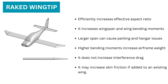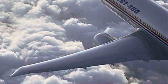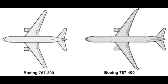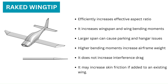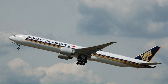Raked wingtip: this type of wingtip is a very efficient means to increase the effective aspect ratio. The location of the tip vortex defines the effective span of the wing, and the tip vortex forms approximately at the trailing edge of the wingtip. For a raked tip, which has a greater trailing edge span, the drag tends to be lower. Its primary drawback is increased wingspan and wing bending moments — the wingspan increase may lead to parking and hangar space challenges, while the bending moment increase raises airframe weight. It does not increase interference drag, though it will increase skin friction if added to an existing wing. An example of a raked wingtip can be seen on the Boeing 777.